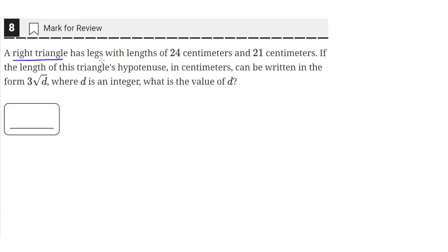A right triangle has legs with lengths of 24 centimeters and 21 centimeters. If the length of this triangle's hypotenuse in centimeters can be written in the form 3 times square root of d, where d is an integer,